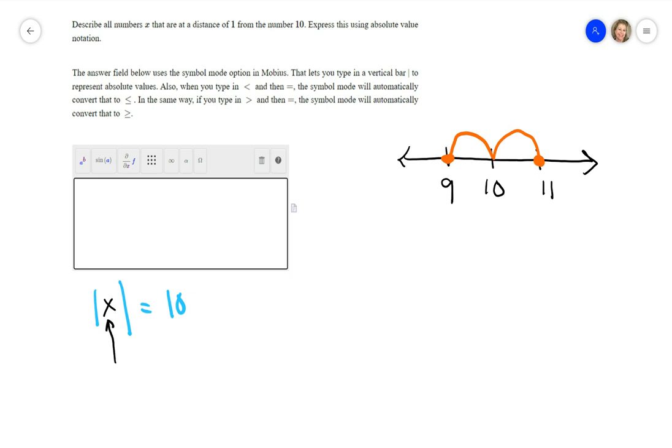This x right here, that could be a 10, but that could also be a negative 10. Because if you take the absolute value of 10, it would be 10. If you take the absolute value of negative 10, that would also be 10.